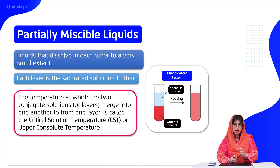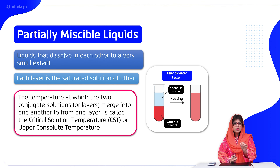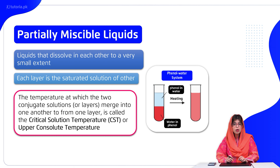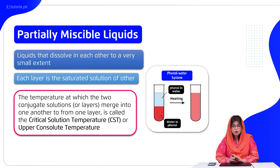Partially miscible liquids are liquids that mix only to a limited extent — they are partially mixed. As temperature increases, the solubility increases, and at a specific temperature these liquids become completely miscible. The temperature at which two solutions merge into one single phase is significant.